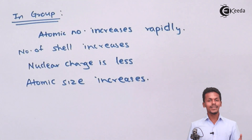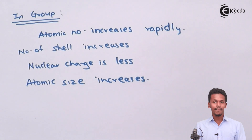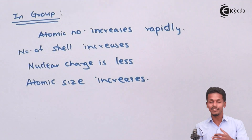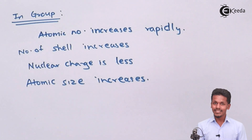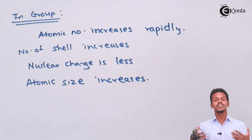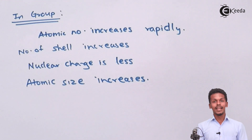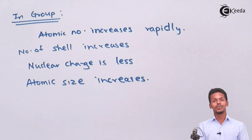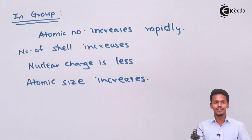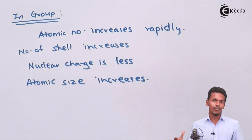So these are the main reasons when talking about periodic trends for atomic size. In a period, the atomic size decreases because the nuclear charge increases and the electrons are being added in the same valence shell. In a group, the number of electrons and number of shells increase rapidly, and the effective nuclear charge decreases — because nuclear charge is the attraction of the nucleus with the outermost electron — so the atomic size goes on increasing. These are the two trends for atomic size in periods and groups.